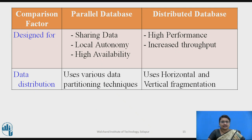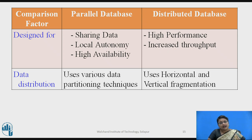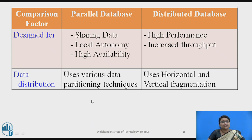For what these are designed: in a parallel database, sharing of data is important, autonomy is local since all nodes work under a single premises, and data availability is very high — these are the main motivations for designing a parallel database. In a distributed database, the motivation is to provide high performance and high throughput. For data distribution, the parallel database applies data partitioning techniques such as round robin, hash, or range partitioning. In a distributed database, horizontal and vertical fragmentation techniques are used.